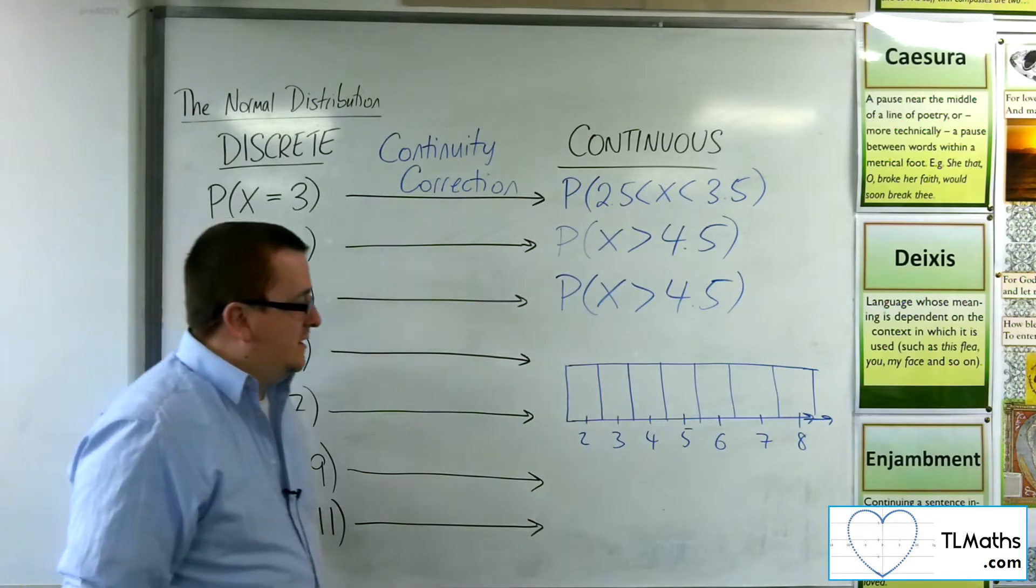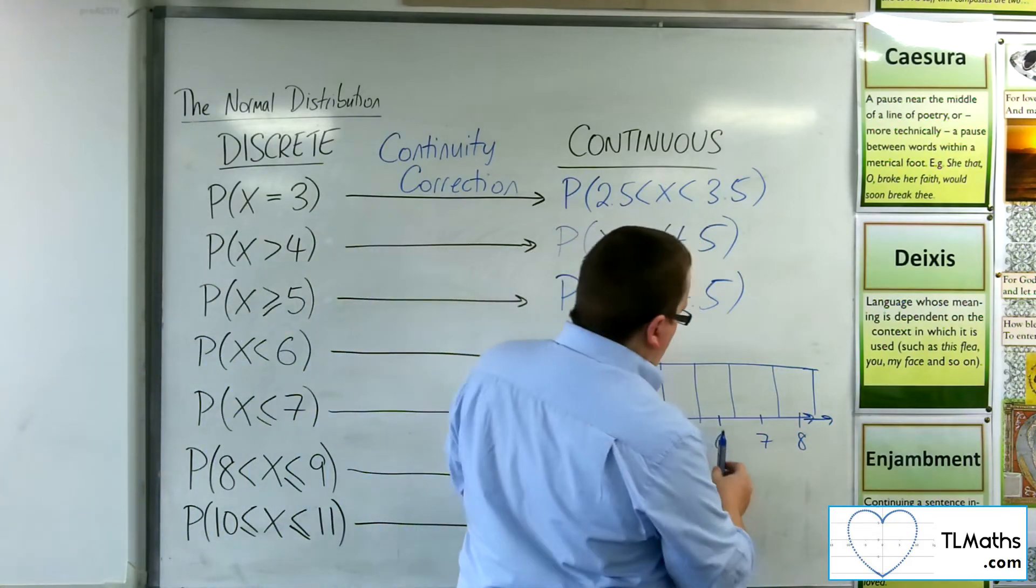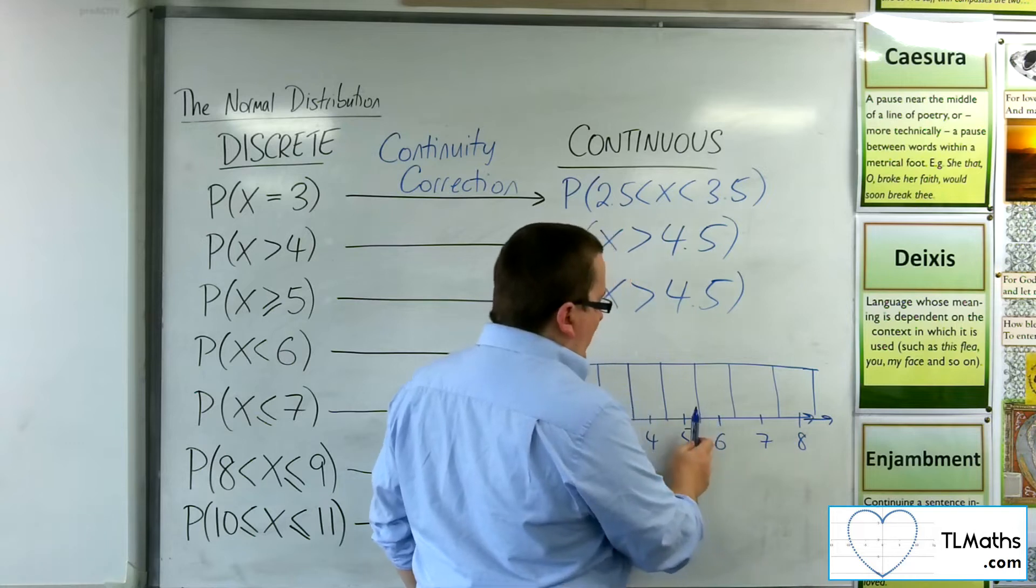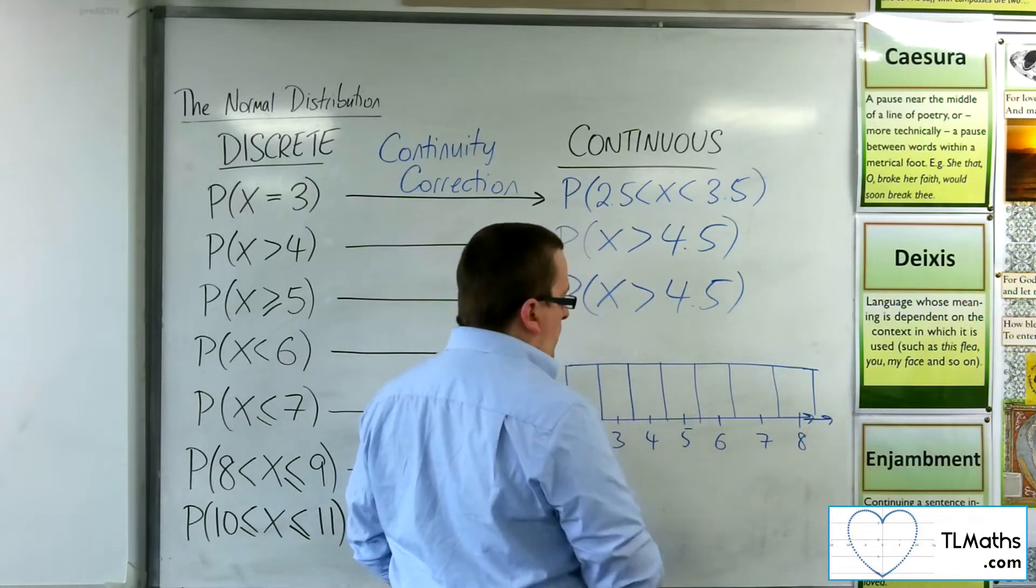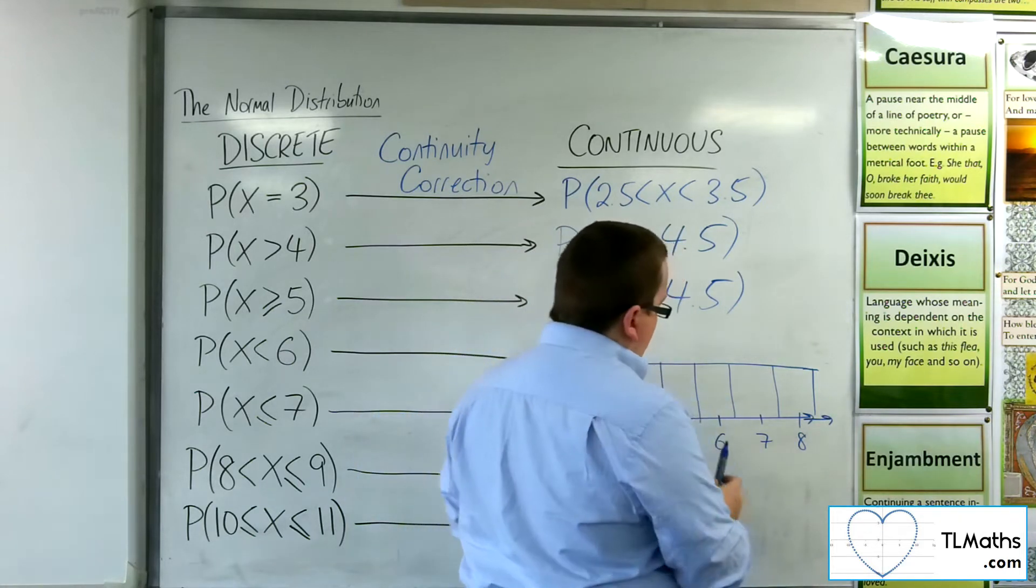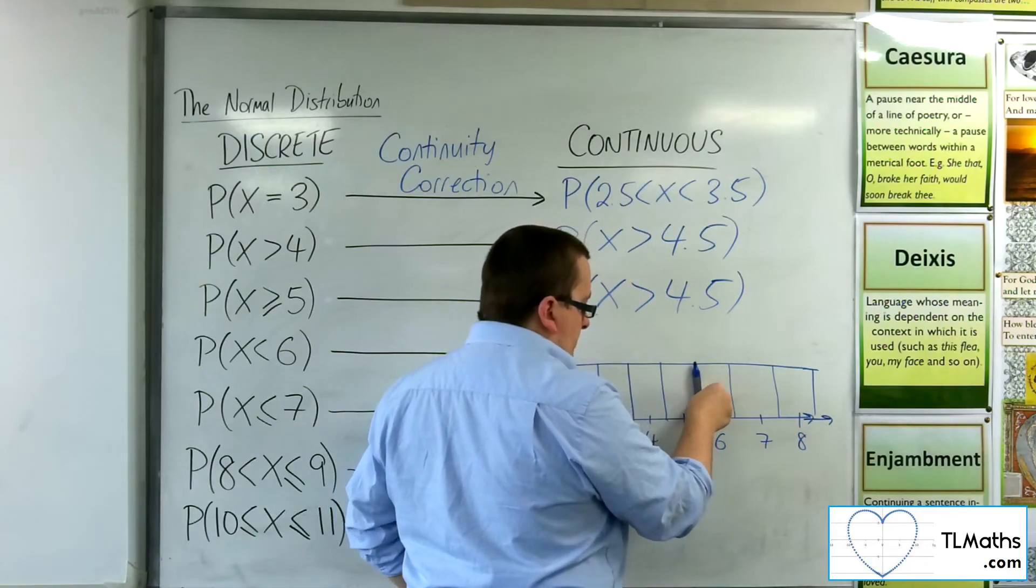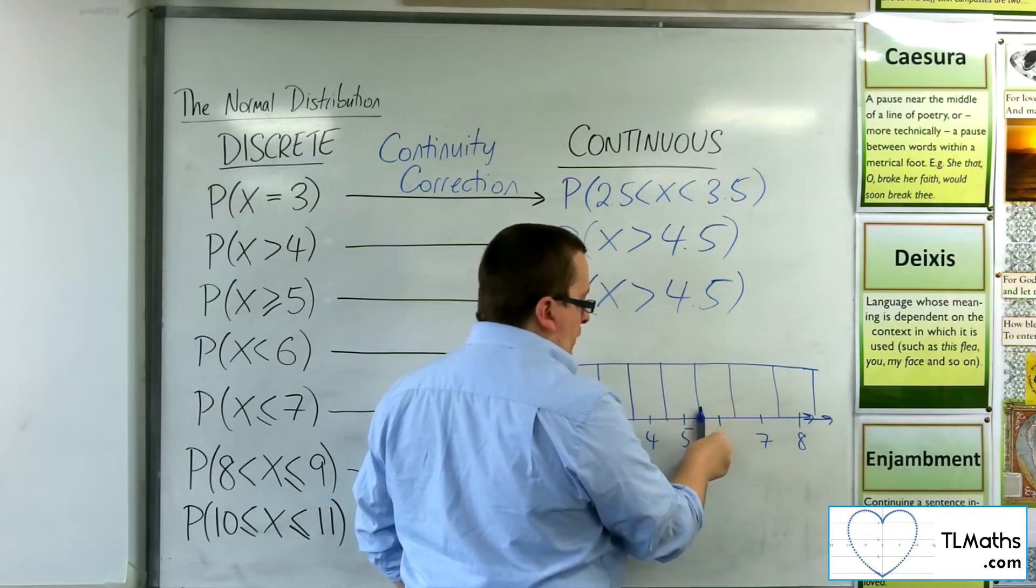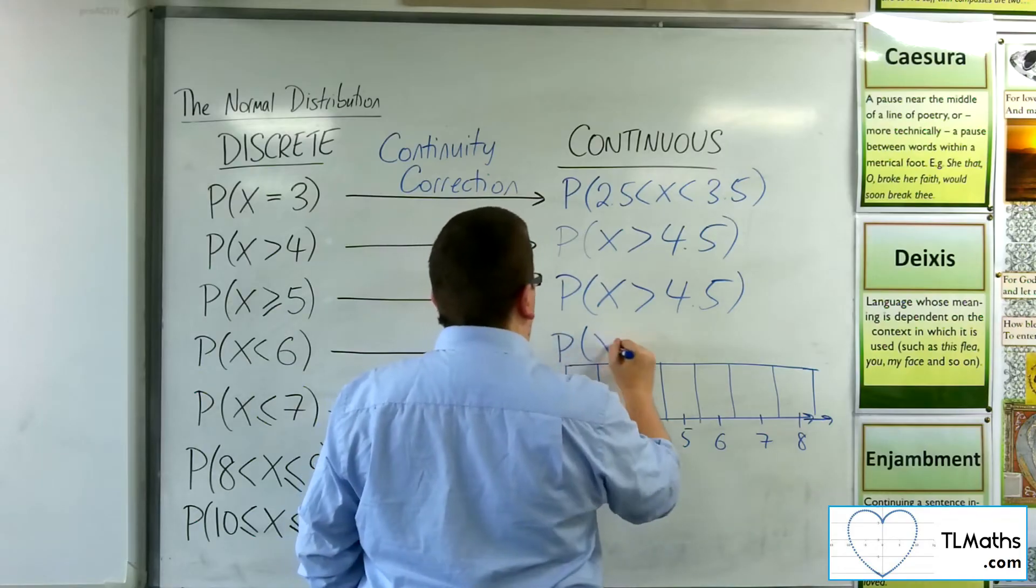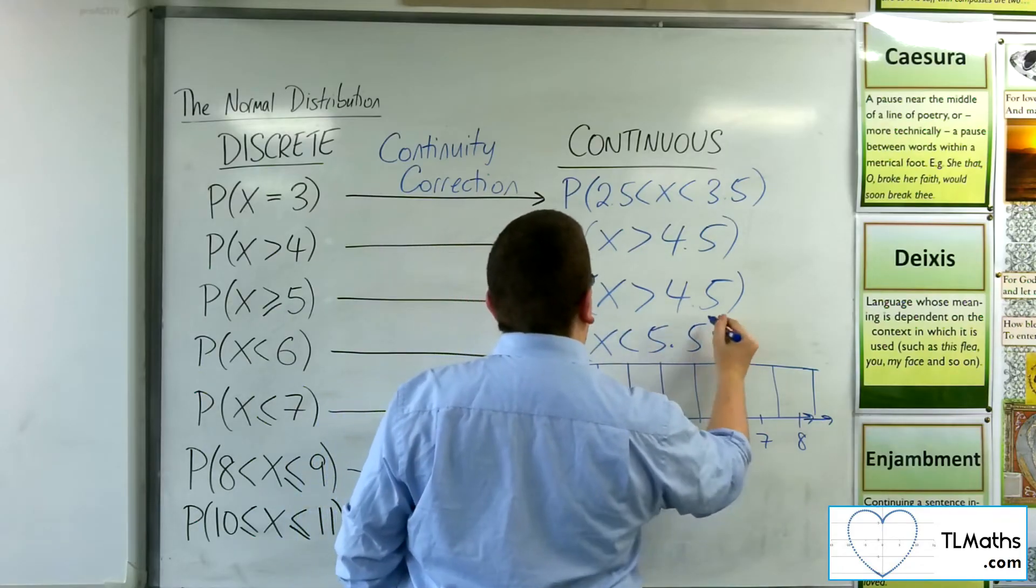Probability of X being less than 6. Here's 6. So I want less than 6, so I want 5, 4, 3, 2, 1, 0. So less than 6, that would be there and down. So that's at the 5.5 mark. This would be the probability of X being less than 5.5.